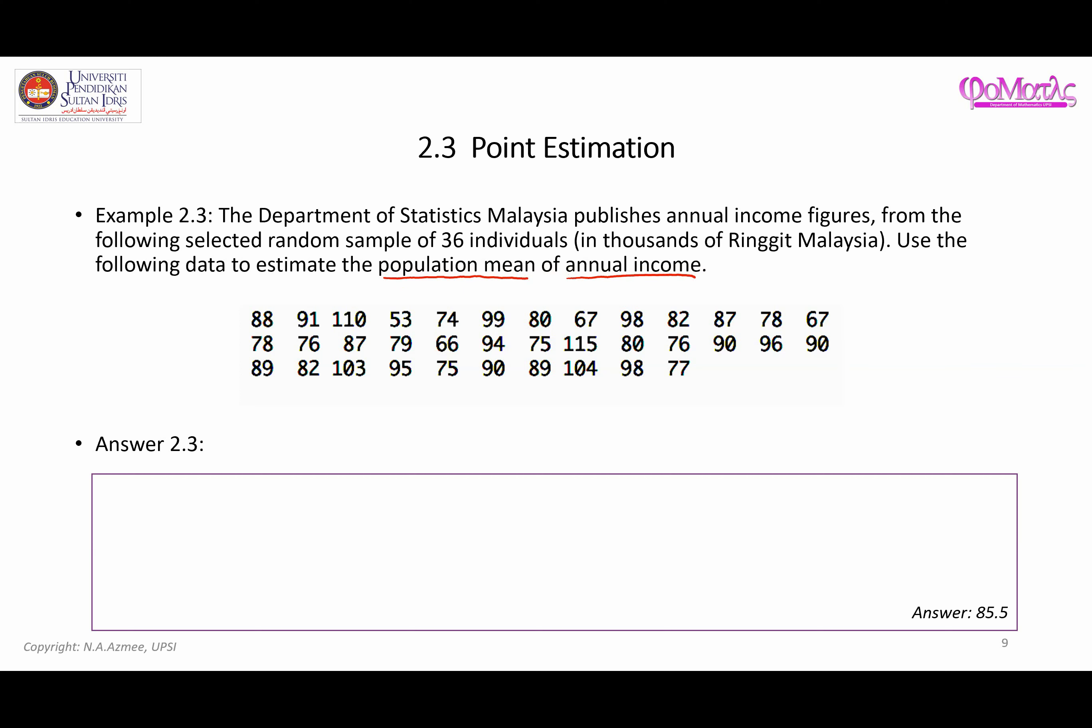The Department of Statistics Malaysia has published annual income figures from the following selected random sample of 36 individuals. The numbers given here are in thousands of ringgit Malaysia. We are now going to use this sample to estimate the population mean. This is actually mu. Therefore we can use the idea of mu is equal to x bar.